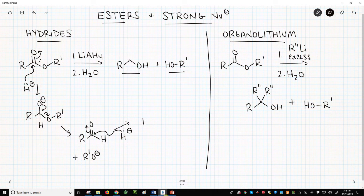This forms yet another tetrahedral intermediate. At this point, we're out of leaving groups. The tetrahedral intermediate is then protonated through the addition of water, and we get one of our alcohols.